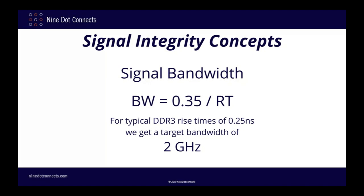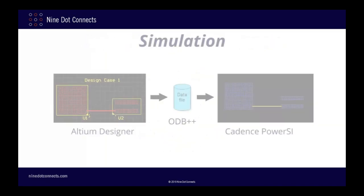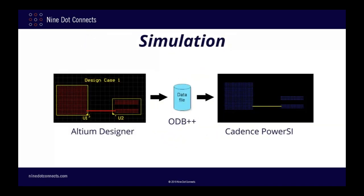Rounding up to a bandwidth limit of about 2 GHz should therefore be sufficient for our simulations. However, since I'm trying to demonstrate overall signal integrity issues rather than just make a working design, I'm going to simulate up to 20 GHz so we can see some of the high-order effects in our examples. Now that we know the signal bandwidth we're interested in, let's go ahead and simulate the PCB.